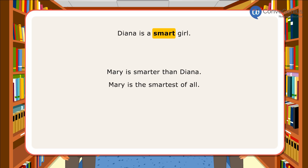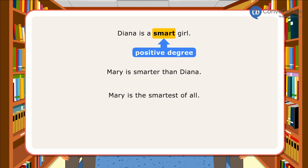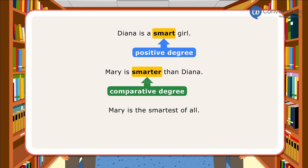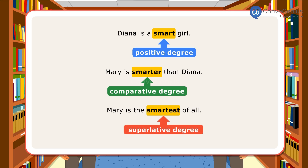In the first sentence, smart is the positive degree of comparison since it refers to only the presence of the quality of being smart. In the next sentence, smarter is the comparative degree as it helps in comparing Mary and Dinah, stating that Mary has more quality of smartness than Dinah. In the third sentence, smartest is the superlative degree since it tells that Mary has the highest degree of quality of smartness. Here is a list of some comparisons in adjectives.